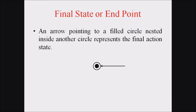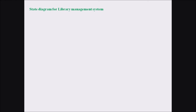The next notation is the final state or end point. An arrow pointing towards a filled circle nested inside another circle represents a final action state. These are the different notations available in a state transition diagram. Now we are moving to our example for the library management system.